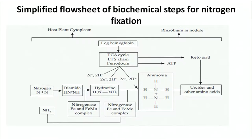Since ammonia is toxic, it has to be immediately removed from the cells and therefore it is converted to amino acids. This is the overall biochemical process in equation form. You can see how leghemoglobin is involved in conversion of nitrogen into diamide, further into hydrazine, further into ammonia — and since this ammonia is toxic, it is converted into ureides and other amino acids. Also mentioned here is the fact that the nitrogenase enzyme contains iron and molybdenum complexes, written as FeMo complexes.